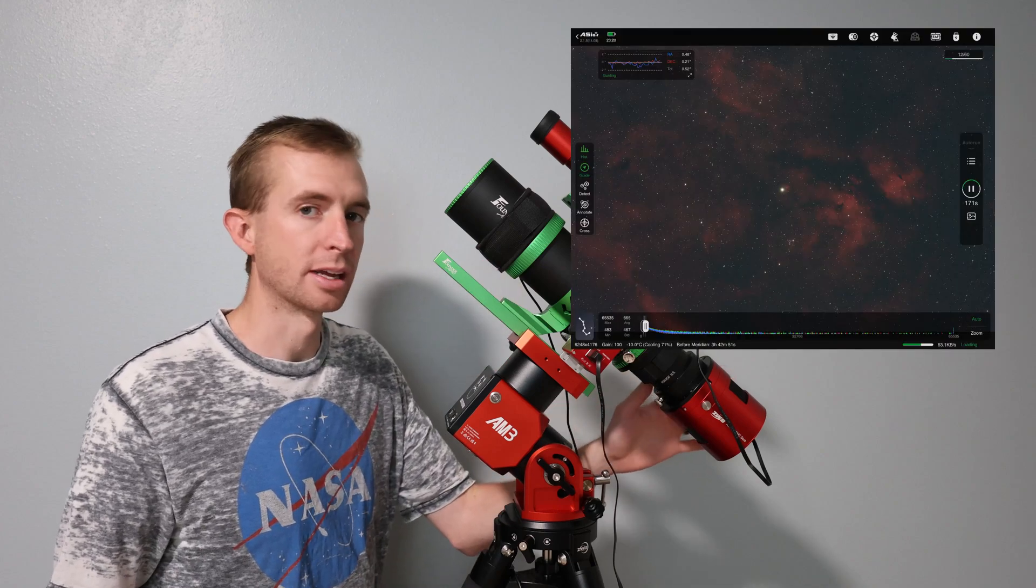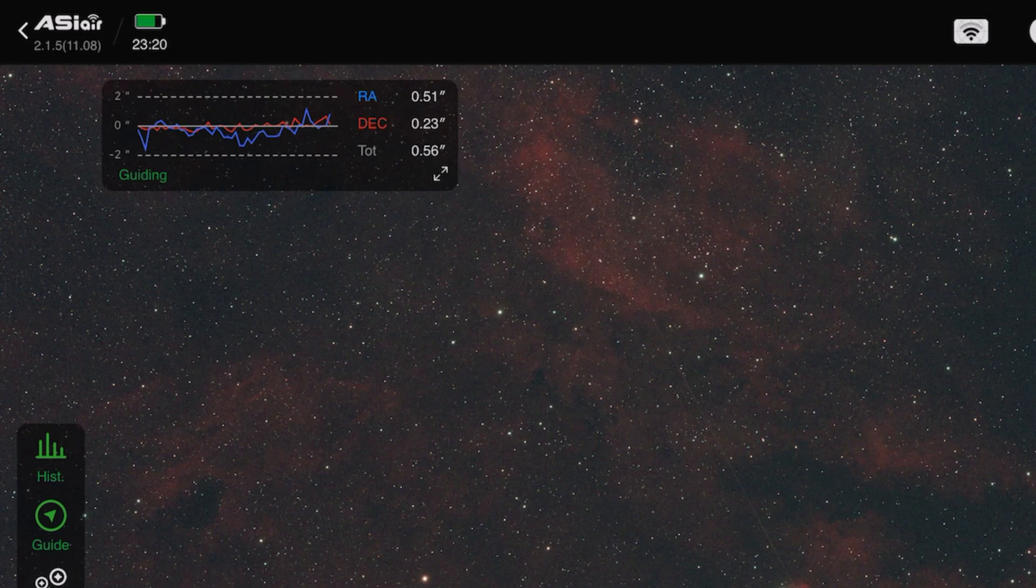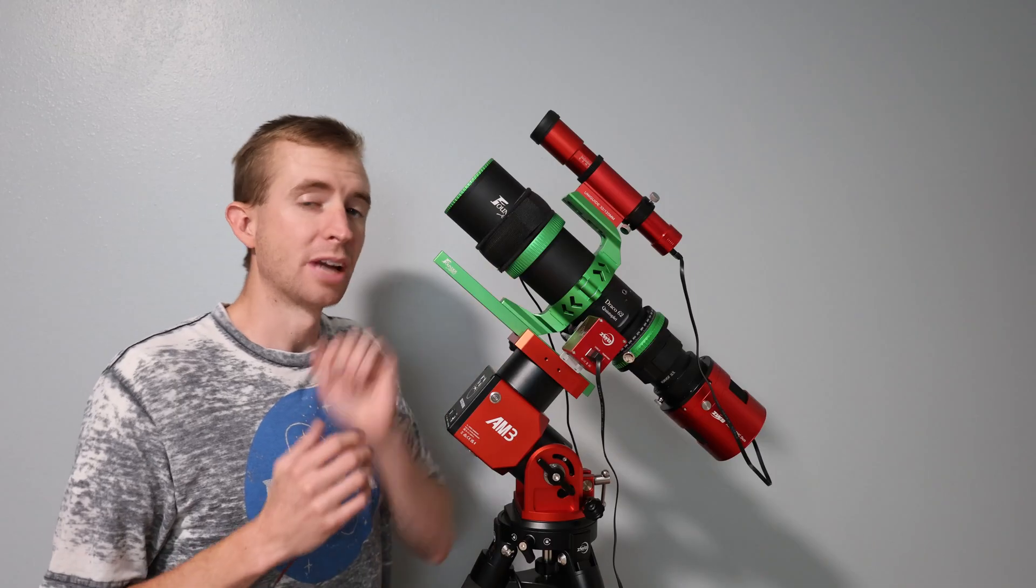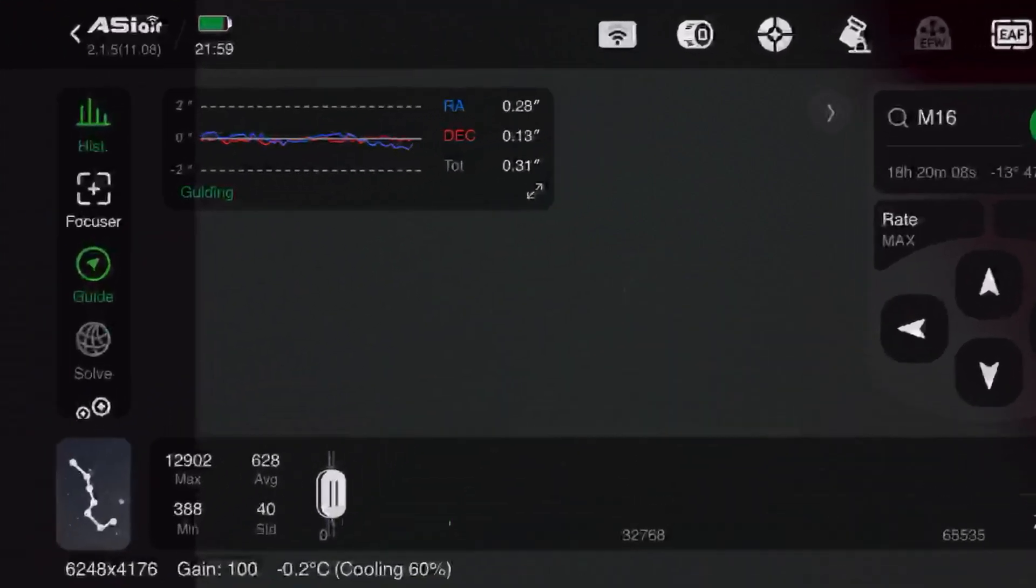So with the 220mm mini, I'm getting on average about 0.5 arc second error or so, night in and night out, as you can see here. That's pretty good. With the 290mm mini, it goes down to about 0.35, 0.4 arc second error, night in and night out. So the guiding performance on the AM3 is excellent.